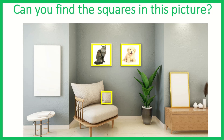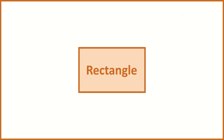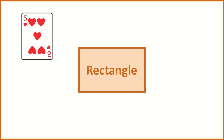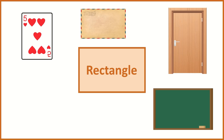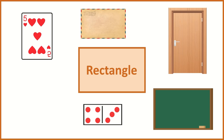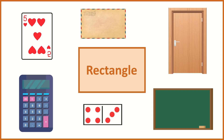Our next shape is a rectangle. Let's look at some examples of rectangles. A playing card is a rectangle. An envelope is a rectangle. A door is a rectangle. A blackboard is a rectangle. A domino is a rectangle. And a calculator looks like a rectangle. Can you look around the room and see if you can find any rectangles?